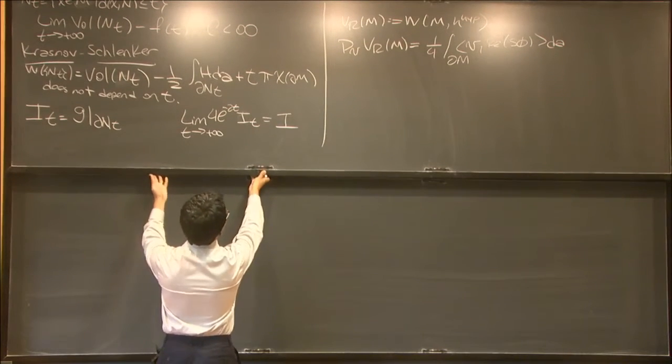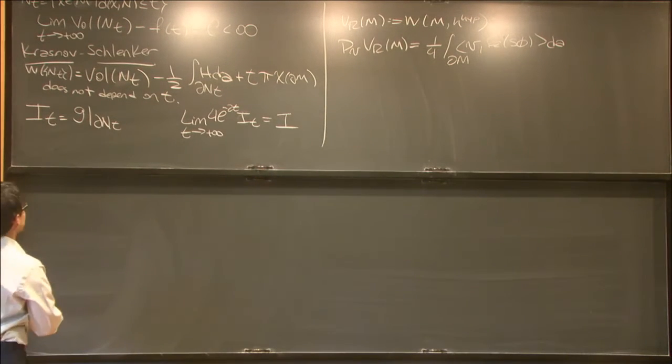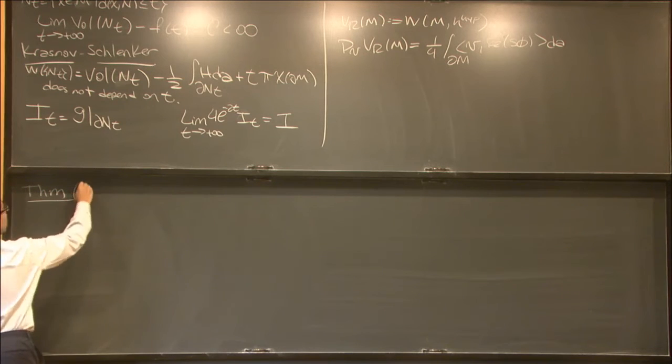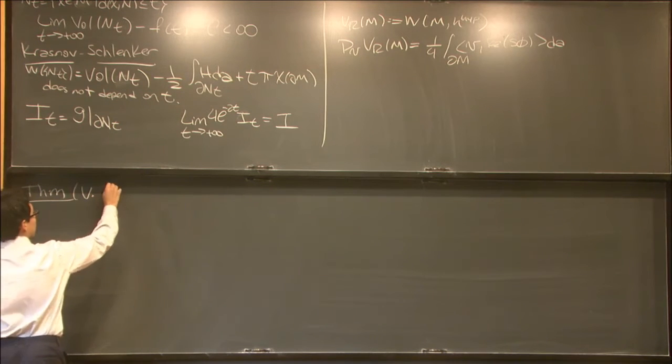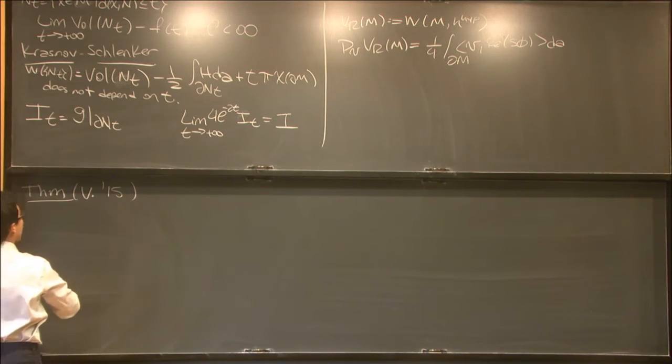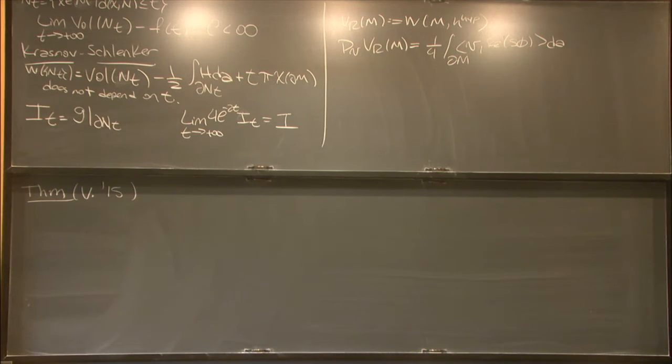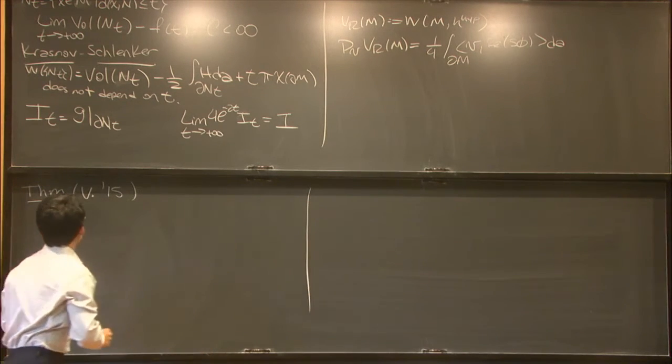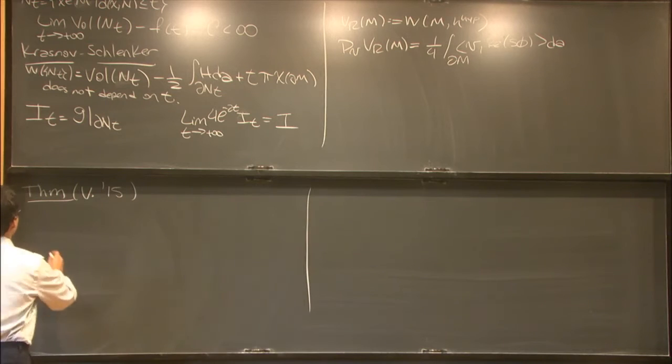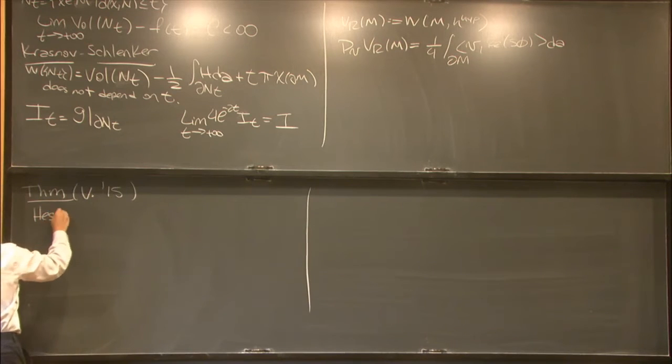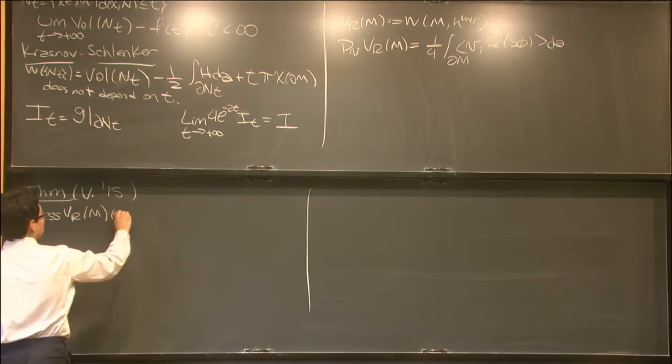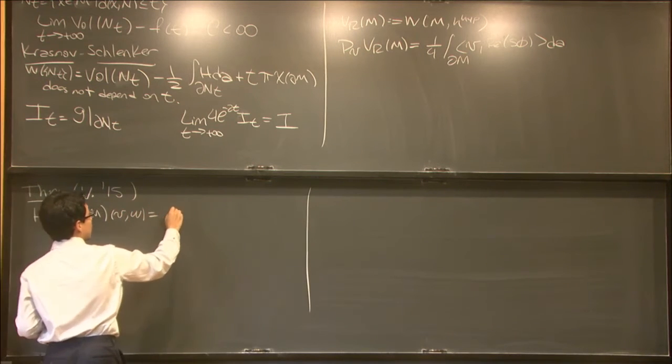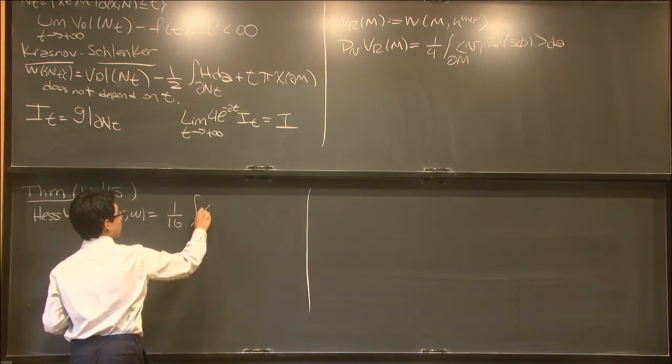So let me now tell you a couple of properties of this quantity that we just defined. This is myself, 2015. And for this, I will add that M needs to be acylindrical. Then I'm assuming that there are not trivial, the existence of non-trivial cylinders in my manifold. It's just a technical definition. And for this computation, only at the critical point, if I were to calculate the Hessian, is given by the following formula.